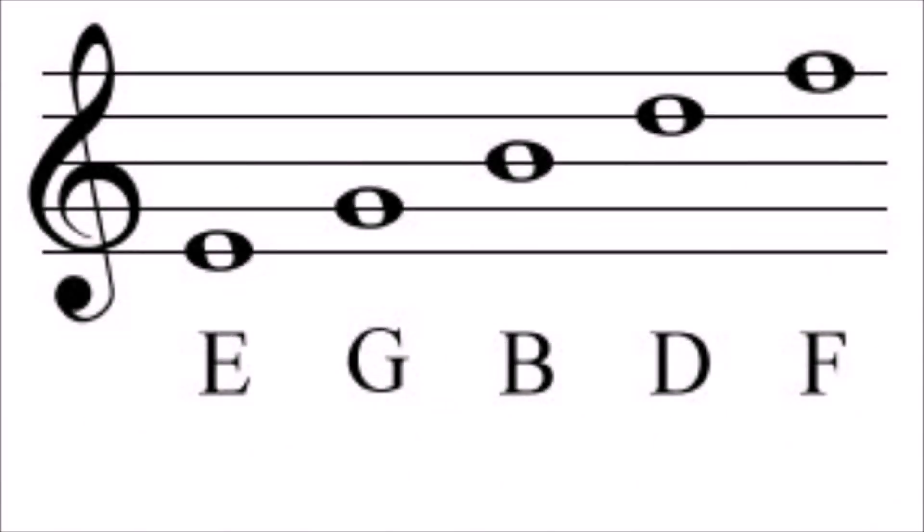E, G, B, D, F. Notes on the line, starting from the bottom, are as follows. The first line is named E. The second line is named G. The third line is named B. The fourth line is named D. And the fifth line is named F.